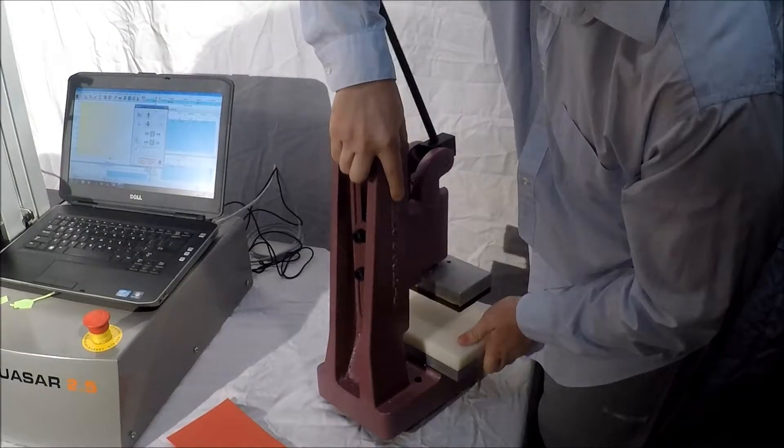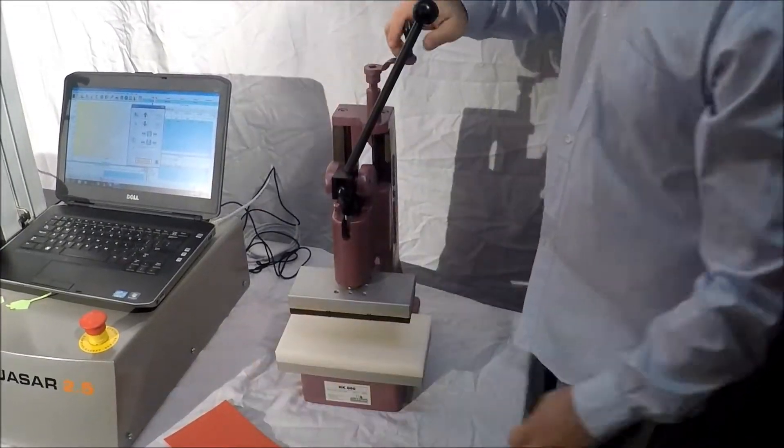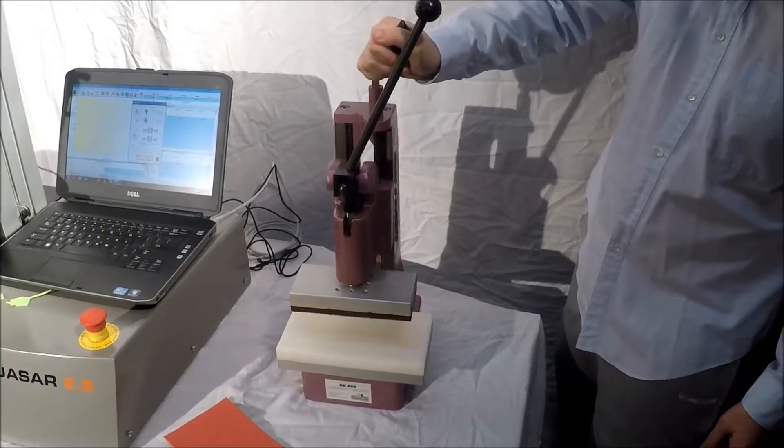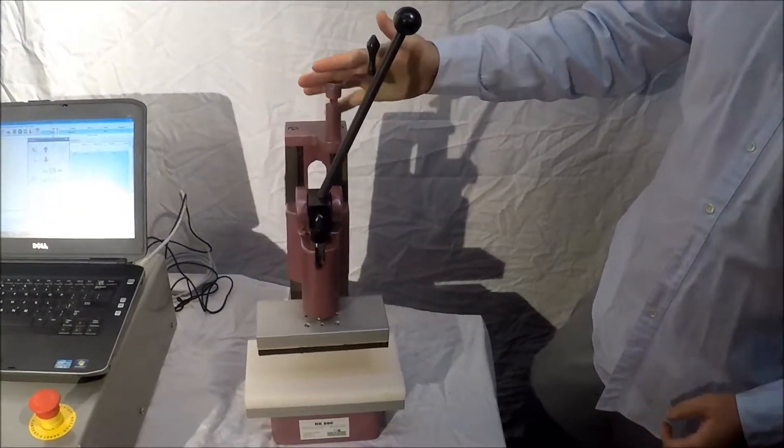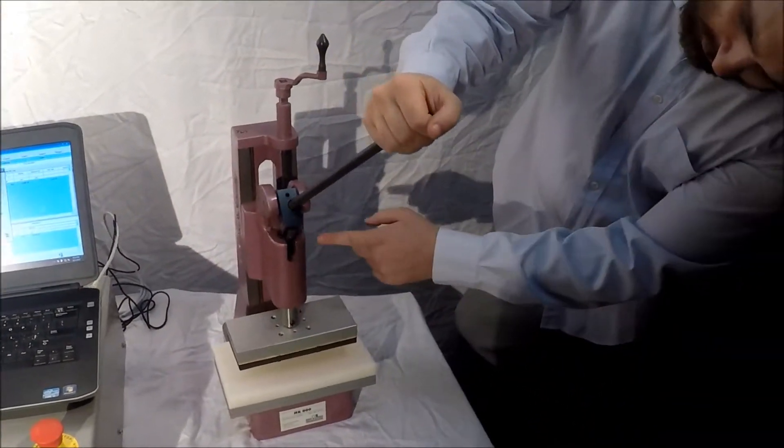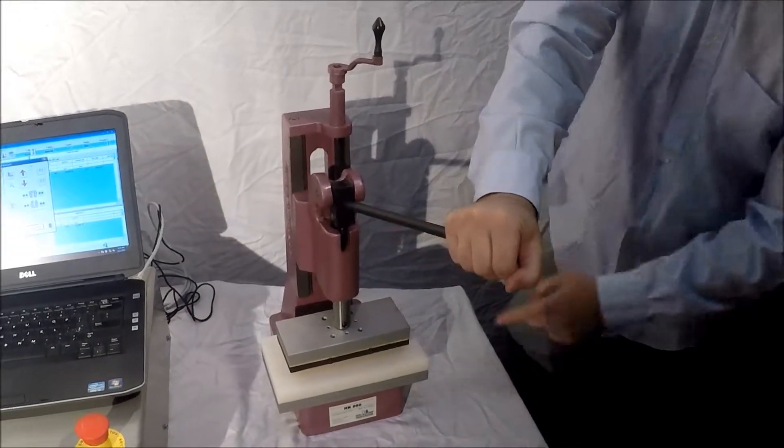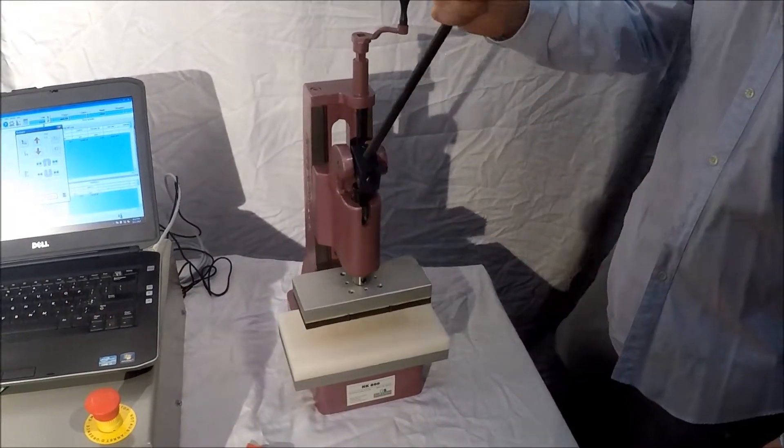Once we do that, we can then turn this screw up here and adjust our head. The reason for adjusting the head is because we want the arm to lock out right at the bottom of the stroke. That's where we get the most leverage off of the gear.